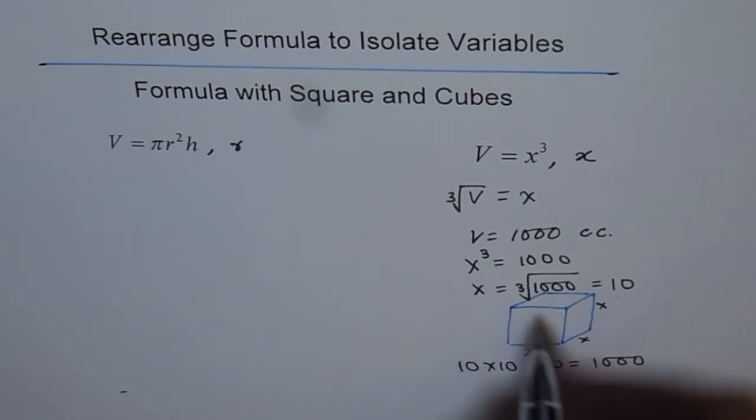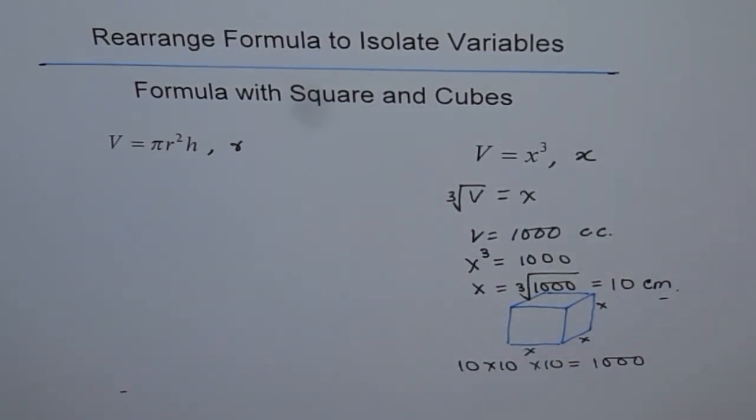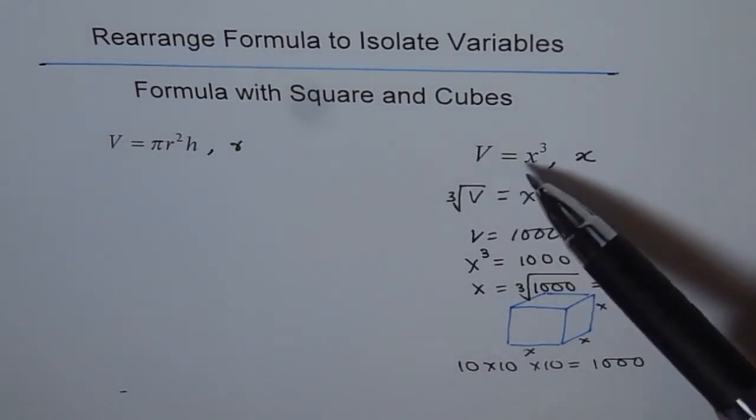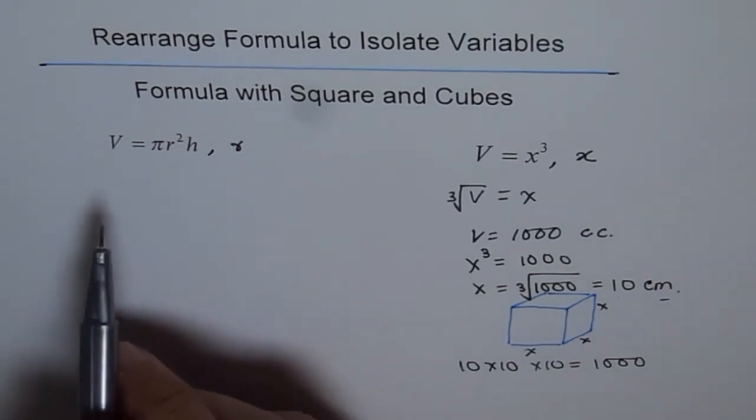So the cube root of 1000 is 10 and that is the answer. So cubic centimeters, we will say each unit is 10 centimeter. And that's how we can solve problems using this formula, volume equals to X cube.